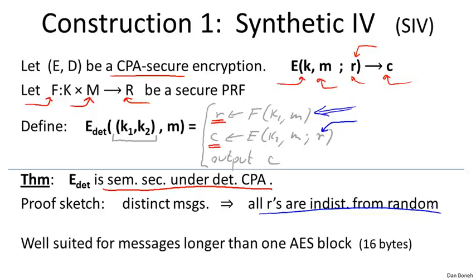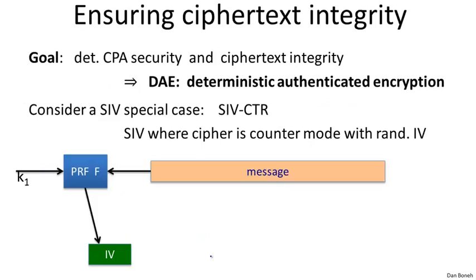This construction is well suited for messages that are more than one AES block. For short messages, we'll see a slightly different encryption scheme that's better suited. Now, the really cool thing about SIV is that we get ciphertext integrity for free — we don't have to use a special MAC if we want to add integrity. In a sense, SIV already has a built-in integrity mechanism.